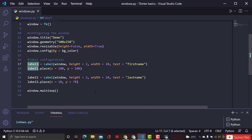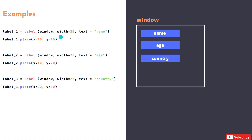You can place not just labels — you can place buttons and many more widgets using place. It's the easiest way to put your widget at the right position in the interface. For example, if we have three labels and want to place them in a specific order, we call label_one.place() with x and y values.